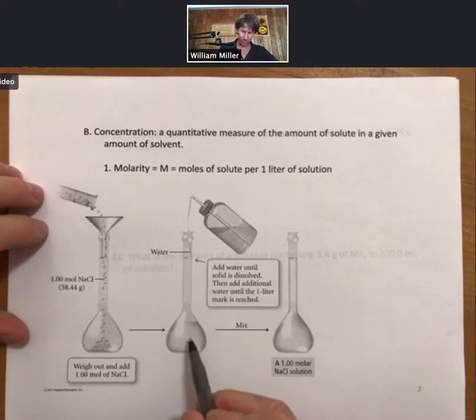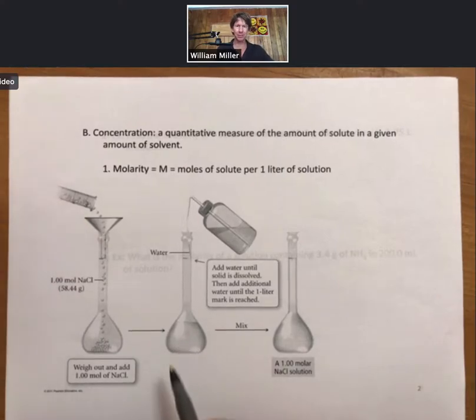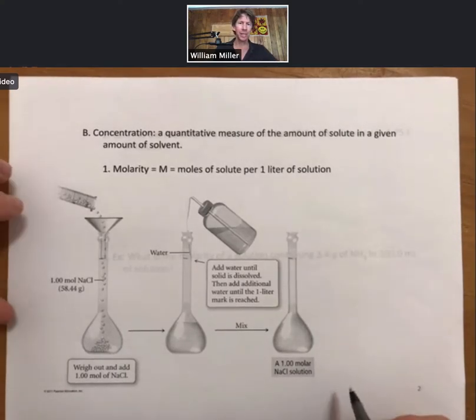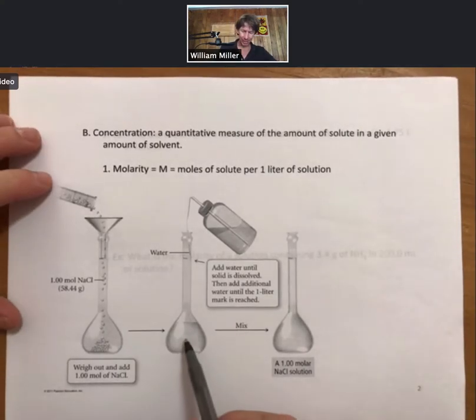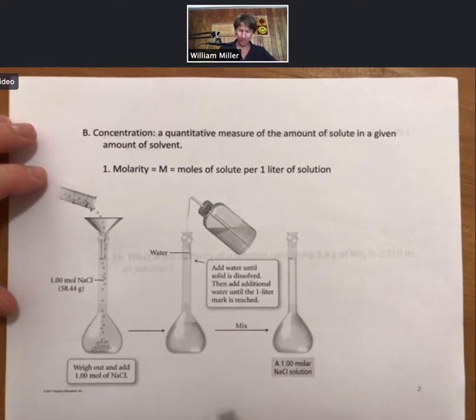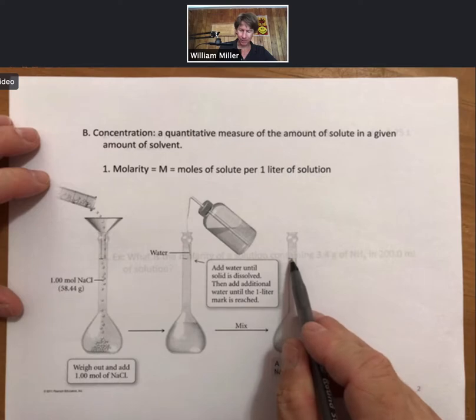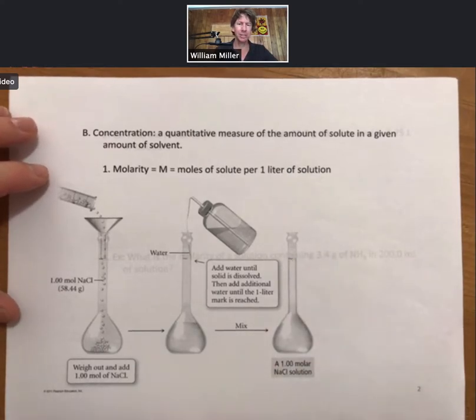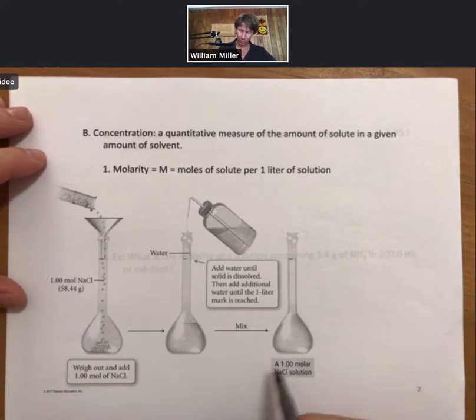We would add some water until the solid is dissolved. Swirl, if you will, and we will get to do this in lab, and then fill it up to the meniscus. So the meniscus sits right on the mark that tells us exactly what the volume is. And in this case, it's a one liter volumetric flask. We have one mole in that one liter.